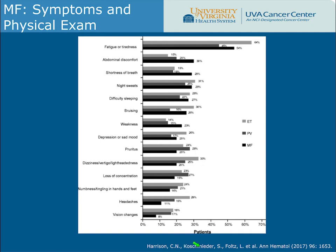Based on a 2017 publication by Harrison et al., the overwhelming symptom patients with myelofibrosis present with is fatigue — approximately 50% of patients. The next most common symptoms include abdominal discomfort, shortness of breath, night sweats, difficulty sleeping, and bruising. Approximately 40% of patients have an enlarged liver and spleen, which contributes to abdominal discomfort and shortness of breath.